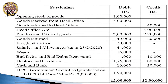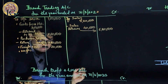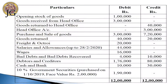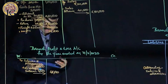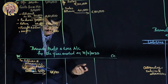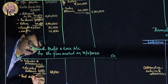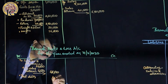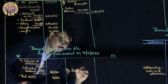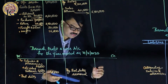Wages of ₹16,000 are debited to the trading account. Bad debts of ₹4,000 are debited to profit and loss account as a loss, and bad debts recovered of ₹10,000 are credited to profit and loss account as income.